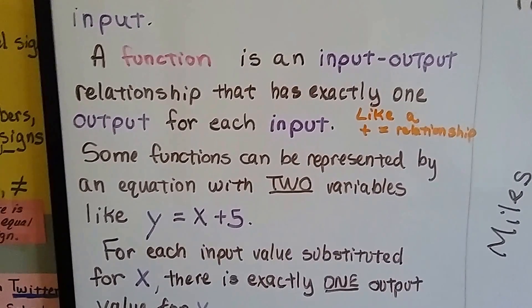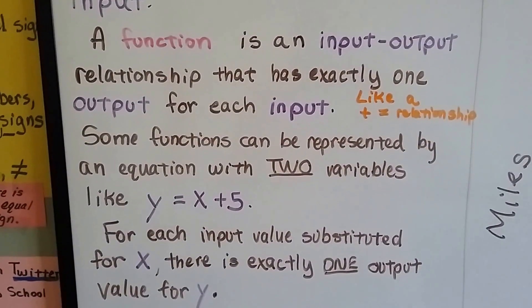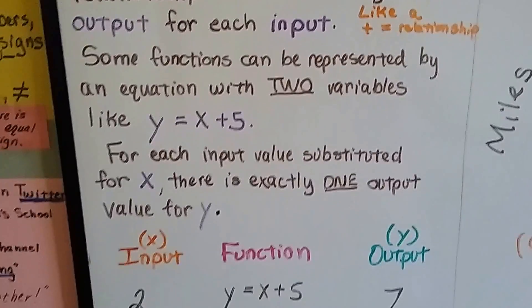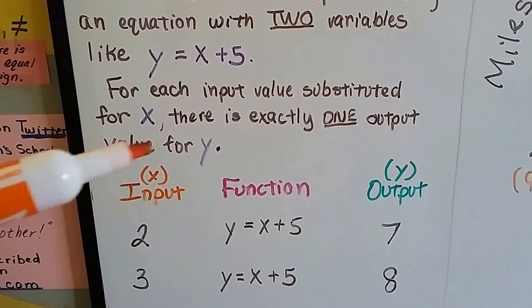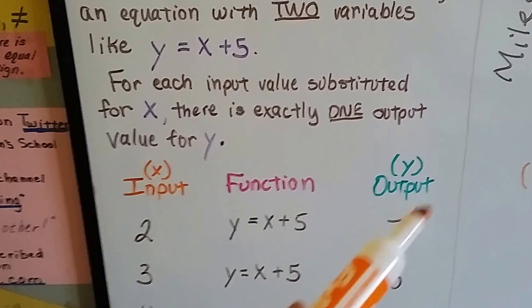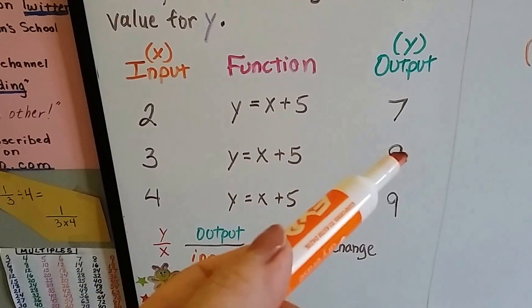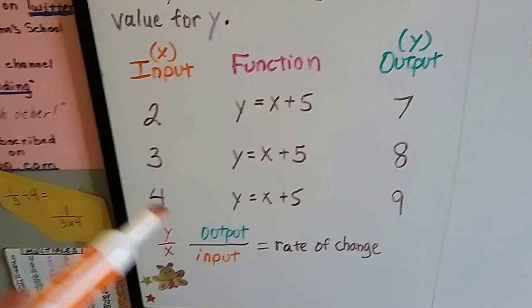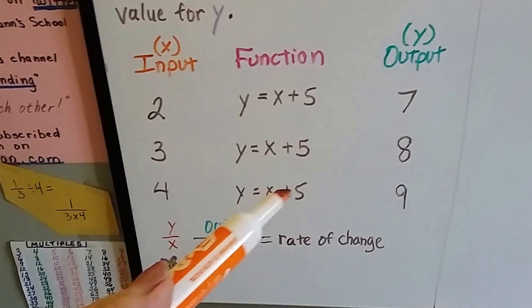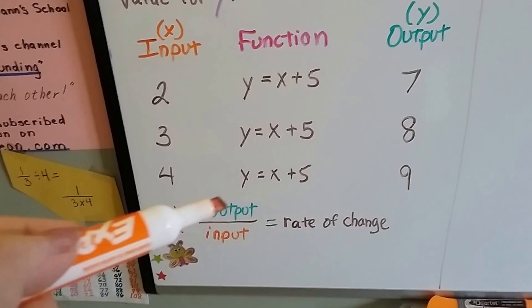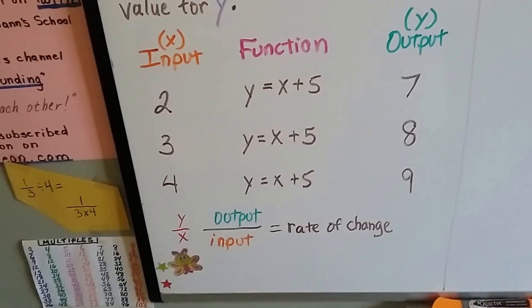It's like an equals relationship. Some functions can be represented by an equation like this with two variables. For each input value substituted for x, there's exactly one output value for y. 3 would be 3 plus 5, that would equal 8 for y. 4 for the x would be 4 plus 5, that would be 9 for y. And y over x is the output over the input, and that tells us our rate of change.